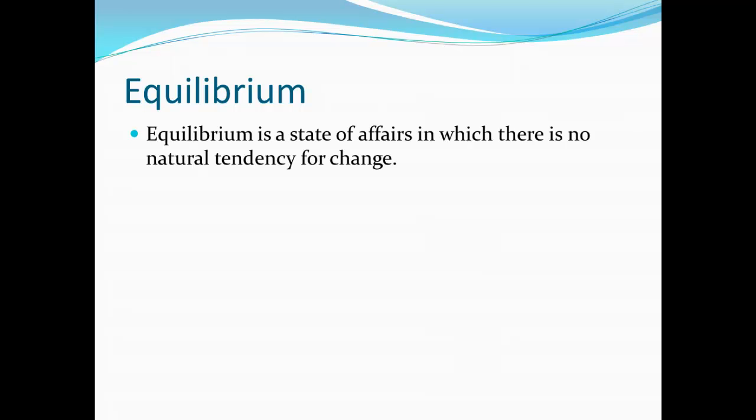In this section, we're going to discuss how supply and demand interact to give us equilibrium — the natural state that prices and quantities are going to tend toward. Equilibrium is defined as a state of affairs in which there is no natural tendency for anything to change. This is a very general definition that covers not just economics, but also biological systems, chemistry, and physics.